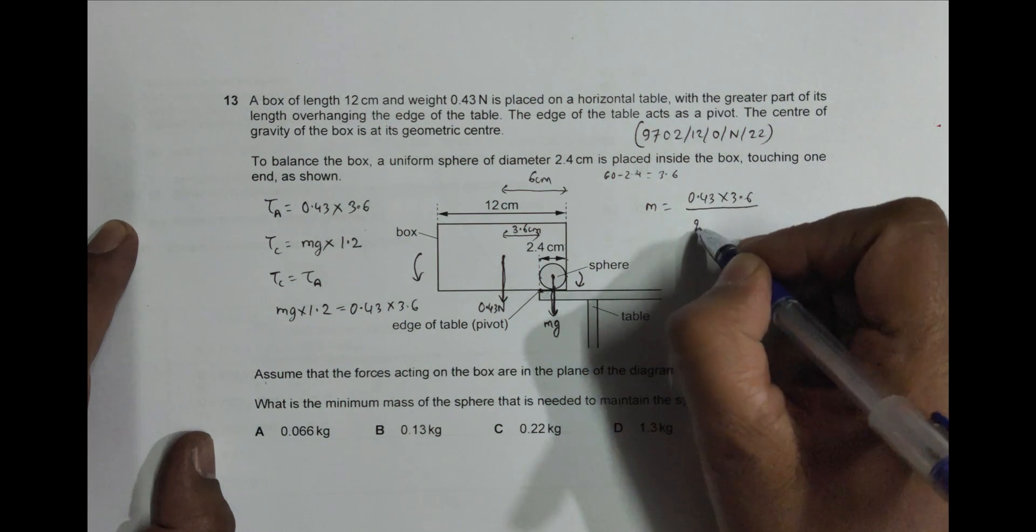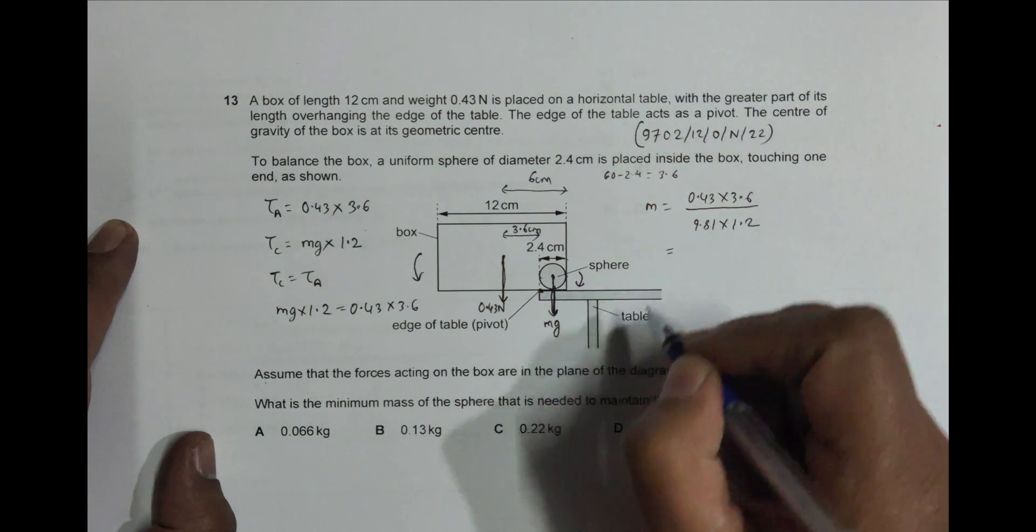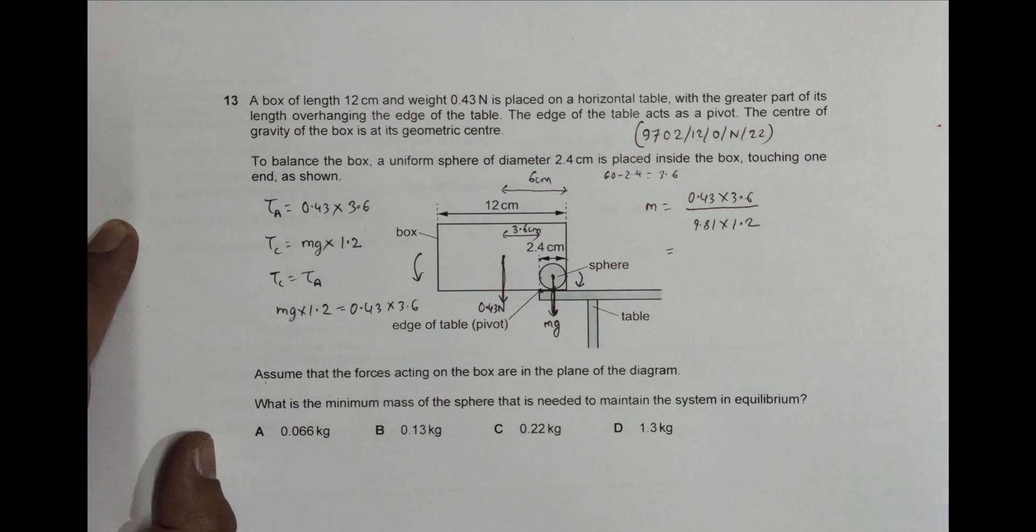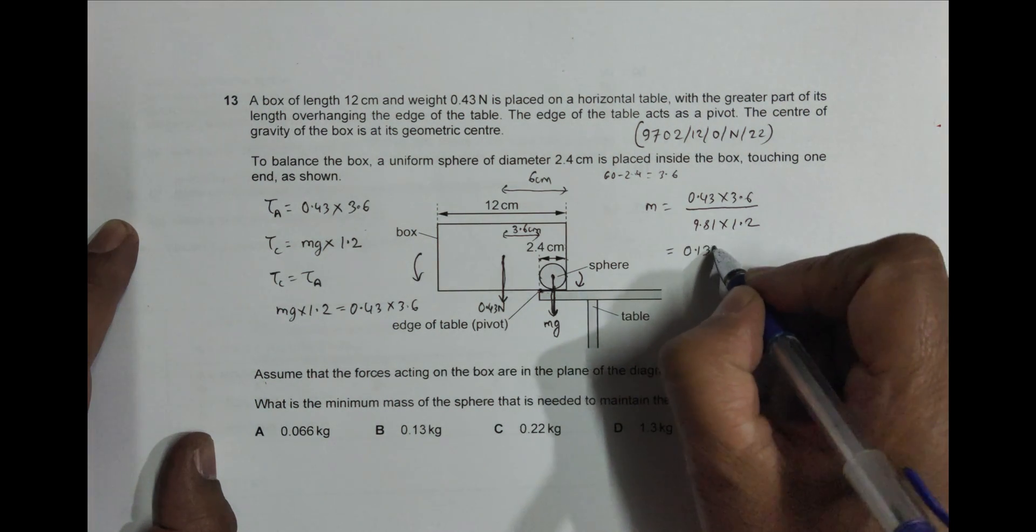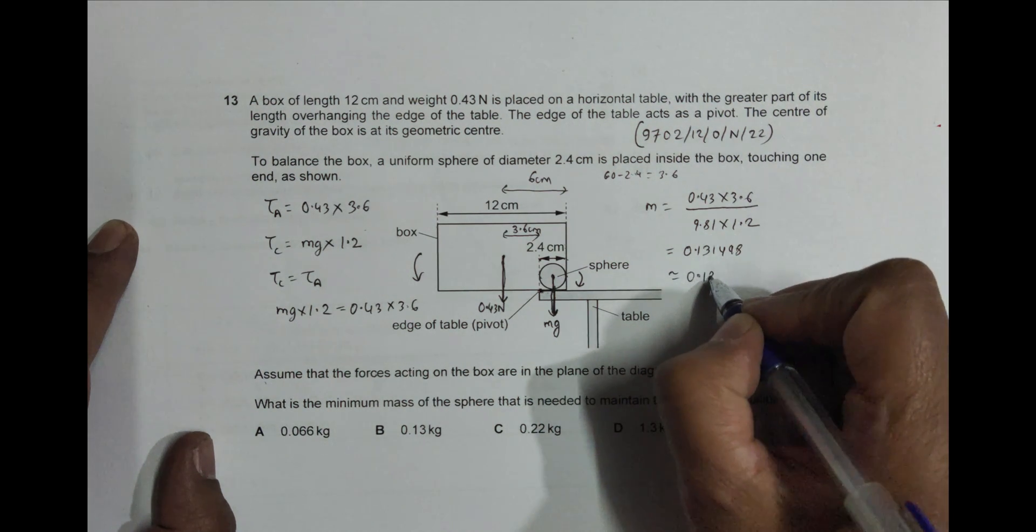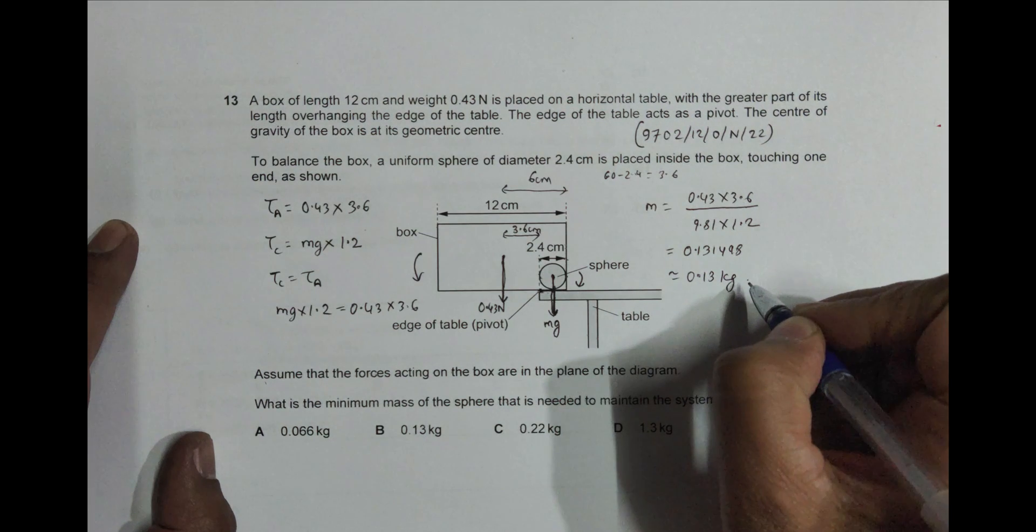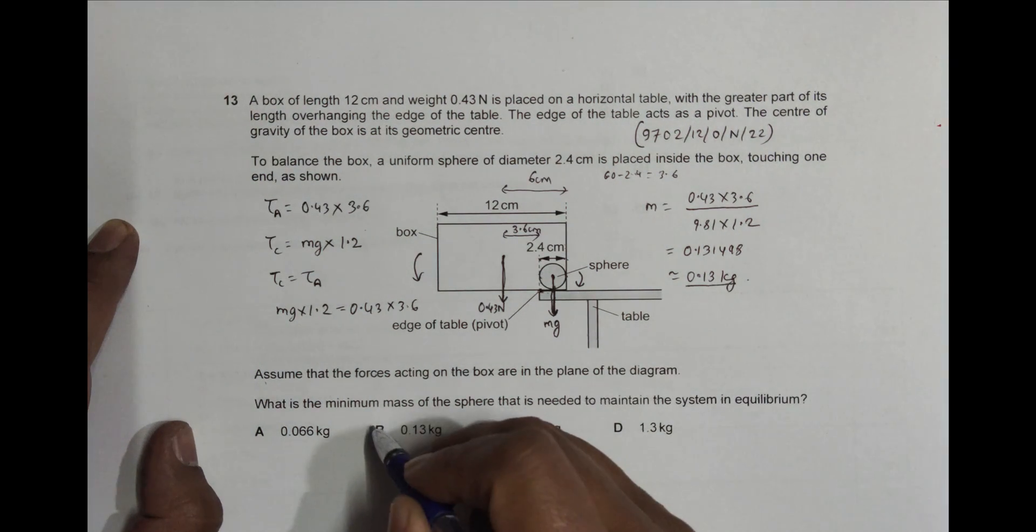So when I do calculations: 0.43 into 3.6 divided by (9.81 into 1.2), very close. So this becomes equal to 0.131498 and nearly equal to 0.13 kg. So our answer, the nearest answer will be choice number B. So this is the correct choice.